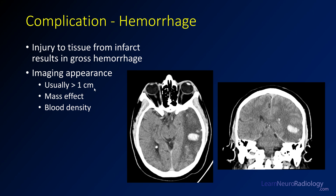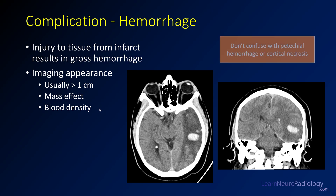These are usually more than a centimeter, usually have mass effect, and are usually blood density. If they're small — a few millimeters, predominantly confined to cortex, and don't have mass effect — I tend not to call that hemorrhagic conversion. We call that petechial hemorrhage, which has less of an implication because patients can stay on anticoagulation. So don't confuse petechial hemorrhage with hemorrhagic conversion.